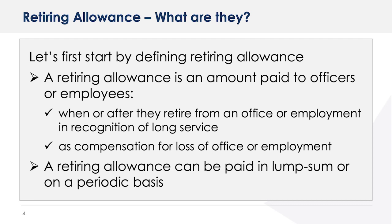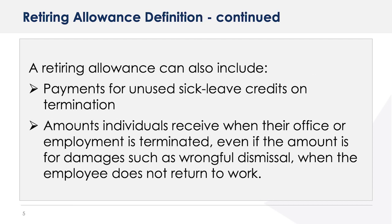If one of your employees has been terminated through no fault of their own, any payments made to compensate them for this would generally be considered a retiring allowance. A retiring allowance can arise out of or in consequence of ceasing to be an employee. A retiring allowance can also include payments for unused sick leave credits on termination, and amounts individuals receive when their office or employment is terminated, even if the amount is for damages such as wrongful dismissal when the employee does not return to work.